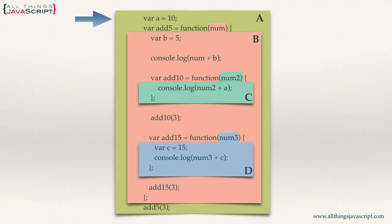Here's a diagram identifying the scope created by the code. The outermost scope is labeled A. The add5 function creates scope labeled B. Inside add5, the add10 function creates scope labeled C, and the add15 function creates scope labeled D. Notice that in scopes B, C, and D, the function definition itself is not part of its own scope — it resides in the outer scope. For example, num2 is part of scope C, but the add10 function itself is part of scope B.